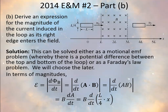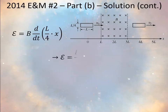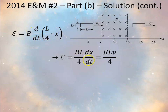The relevant area is the portion of the loop inside the field: that's x times the height of the loop, where the height is L/4. Since L/4 is constant, it also comes out of the time derivative. What remains is B·(L/4)·(dx/dt). And dx/dt is just V, the speed at which the loop is moving. So we have a general expression for the induced EMF in the loop.